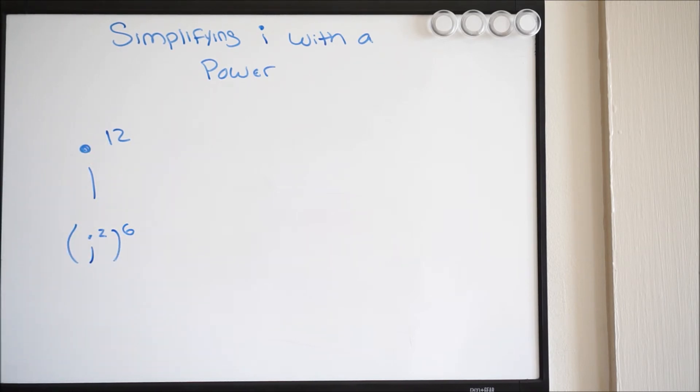So mathematically this is the same. However, we just broke this apart so it's easier to see what's going on. We know that i squared is negative 1, and then to the 6th power. Well, negative 1 to the 6th power is simply just going to be 1, and that's it.